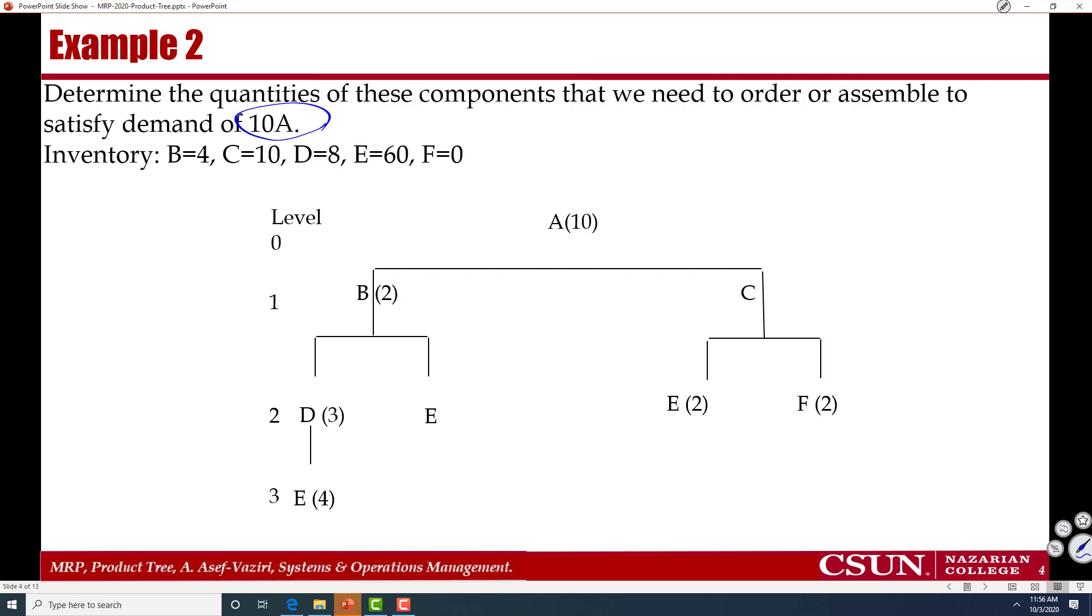And suppose we have 4B, 10C, 8D, 6E, and no F. Since I need 10A, therefore I will need 2 times 10 equal to 20B. And because I have 4Bs, therefore I need 16Bs, and this inventory is 0.